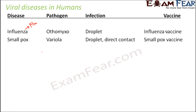Smallpox has already been eradicated. The first vaccine for smallpox was discovered by Edward Jenner in 1798, and the disease was finally eradicated in 1977 — that was the year the last case was identified. Smallpox is caused by the variola virus, and the infection spreads either by direct contact with the patient or by droplet infection.